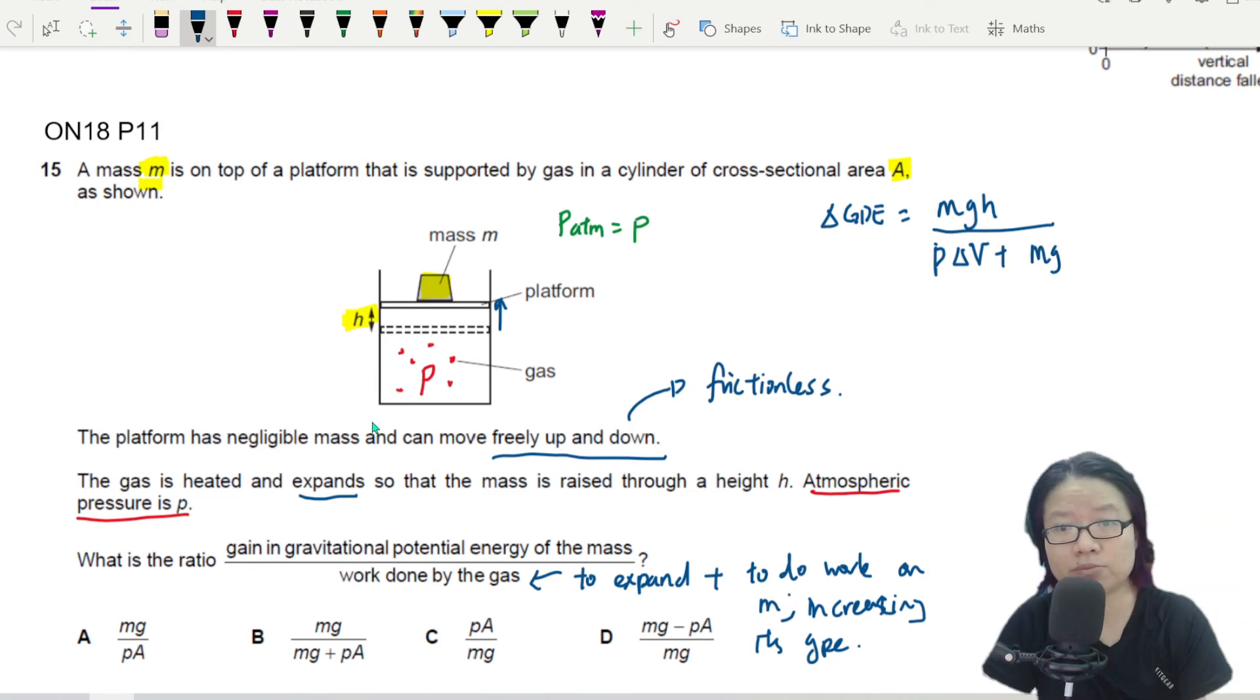Plus work done to lift up the mass m. That would be mgh again. So we need some work, some energy. This one is from expanding. And the other one is to increase the GPE.